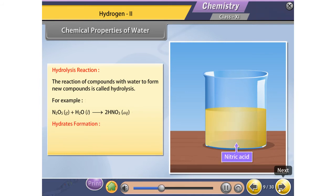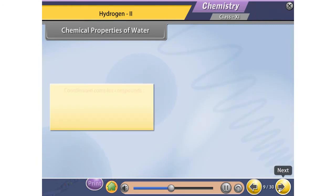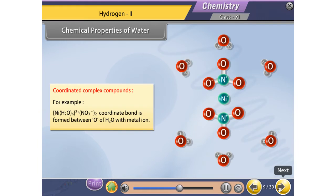Hydrates formation: Water forms hydrates with metal salts. There are three main types. Coordinated complex compounds, for example, Nickel-2-Nitrate hexahydrate. Coordinate bond is formed between O of H2O with metal ion.